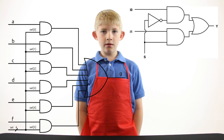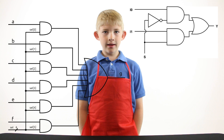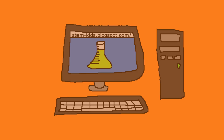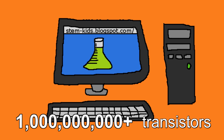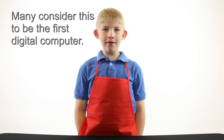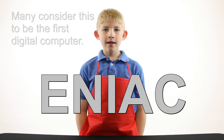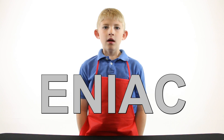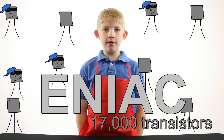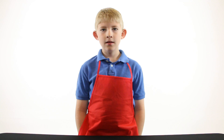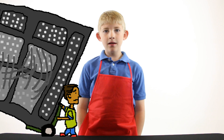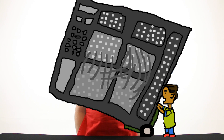It takes a whole bunch of transistors to get the gadgets we have today. Modern desktop computers have over a billion transistors. Compare that to one of the first computers — the ENIAC had the equivalent of 17,000 transistors, but took up a whole room and weighed about 27 tons.